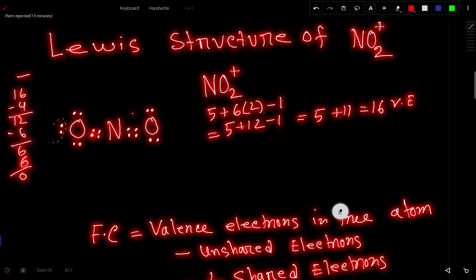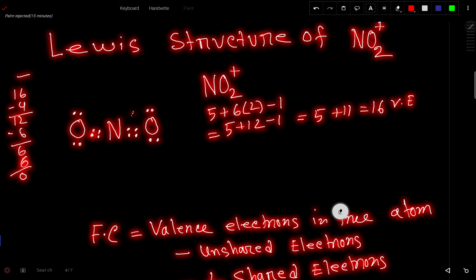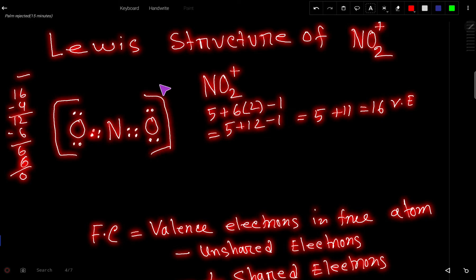So this is the Lewis structure of NO2+, the nitronium ion. At last, you have to place it in brackets with the charge. After placing the bracket, you put the positive charge outside. Now, double-bonded oxygen always has zero formal charge, but the formal charge of nitrogen will be plus one, which gives the overall charge of plus one for the ion.